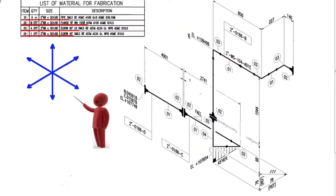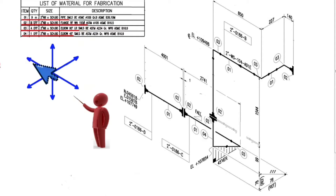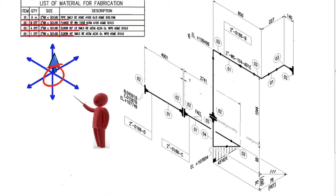To read the drawing correctly, we must first learn these directions. These are the lines that show the directions: north, south, east, west, up, and down. A person who wants to read a drawing should imagine himself at the intersection of these directions. Then that person's face will look to the north, his back will look to the south, his right hand will look to the east, his left hand will look to the west, his head will be up and his feet will be down.